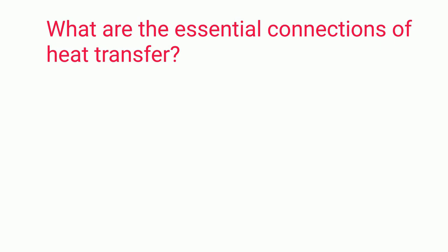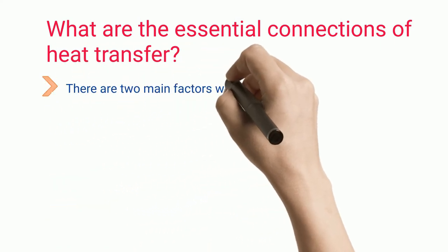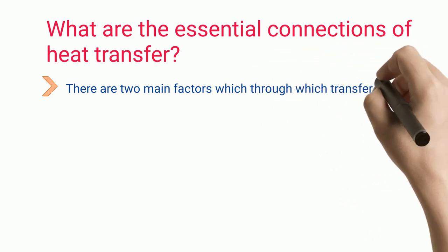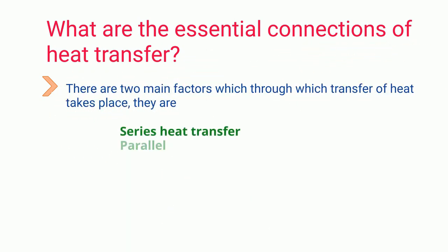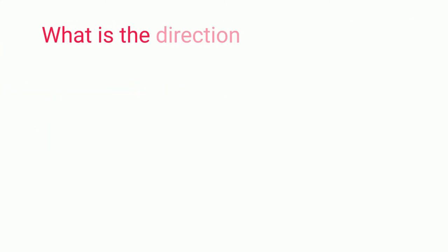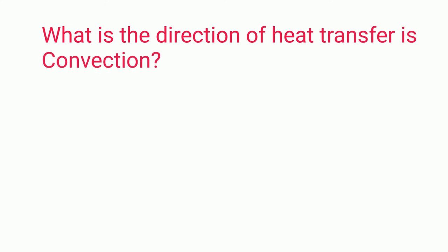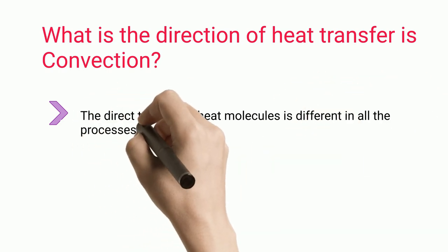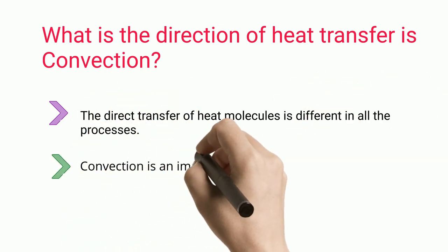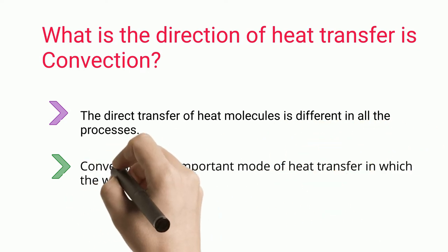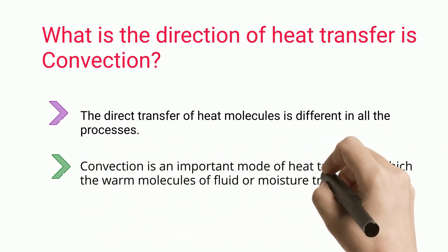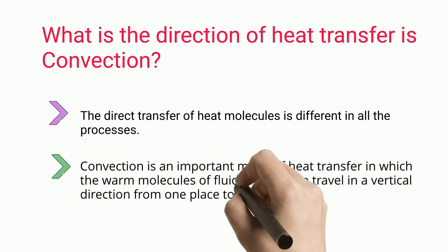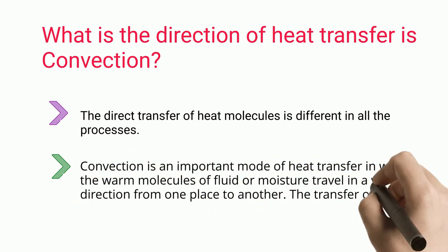What are the essential connections of heat transfer? There are two main factors through which transfer of heat takes place: series heat transfer and parallel heat transfer. What is the direction of heat transfer in convection? Convection is an important mode of heat transfer in which the warm molecules of fluid or moisture travel in a vertical direction from one place to another. The transfer of heat in convection is a rapid process.